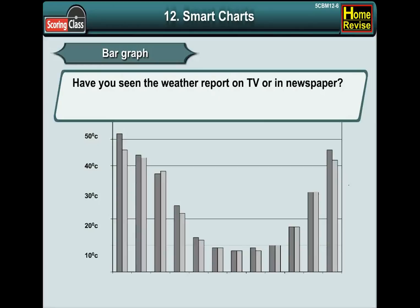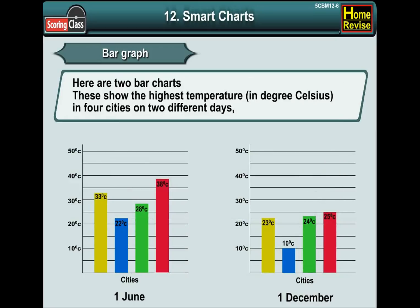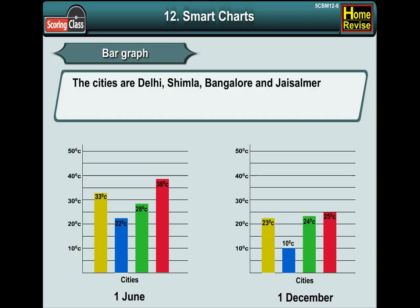Kids, have you seen the weather report on TV or newspaper? Here are two bar charts. These show the highest temperature in degrees Celsius in four cities on two different days. The cities are Delhi, Simla, Bangalore and Jaisalmer.